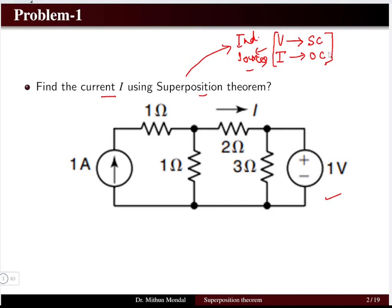In superposition theorem you will be taking one source at a time: first consider the first source, then the second source, then the third source, and then we will be adding up the cumulative responses of all the sources one at a time. We are going to understand this using some problems.